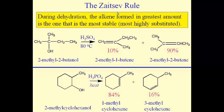This is called the Zaitsev rule. It was formulated in the 1800s, and it was noticed that during the dehydration of any alcohol, when you get mixtures, you tend to get more of the alkene that is more highly substituted. Those are the ones that are going to be more stable, so they form in greater amounts. For this first alcohol, if I take the OH along with one of the hydrogens from the methyl group on the left side, that gives the first product, but I can also imagine taking one of the CH2 hydrogens, which leads to the other product.